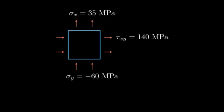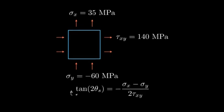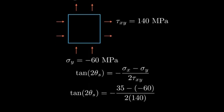To find the orientation of the planes of maximum shearing stress, we'll use the equation tangent of 2 theta s equals negative sigma x minus sigma y over 2 tau xy. Let's plug in our values. We have negative 35 minus negative 60, all over 2 times 140.